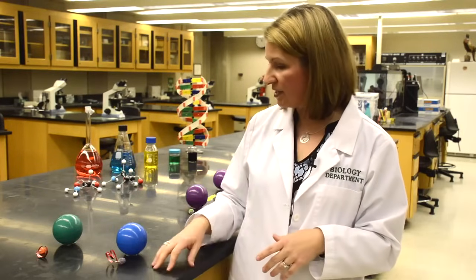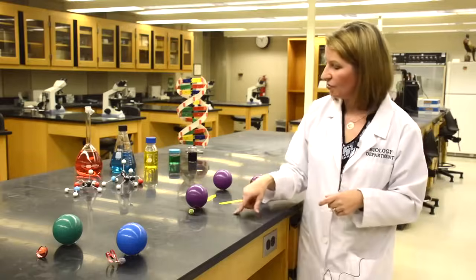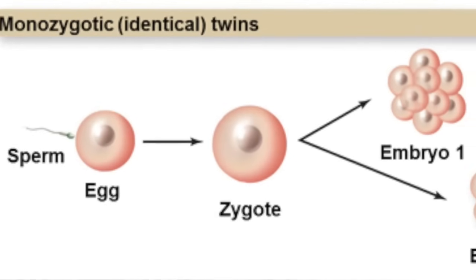So again, when we look at this, this is your dizygotic twins. So those are fraternal twins. These are your identical twins. And again, those are monozygotes.